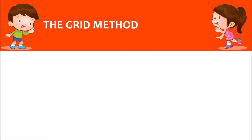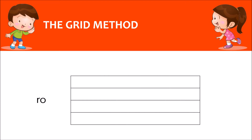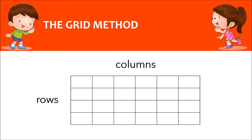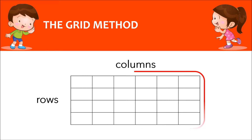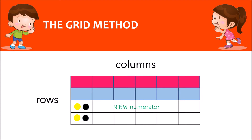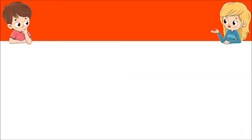This method uses rows and columns to represent the denominators. The product of the rows and columns will represent the new denominator, and the sum or difference of the numerators will be the new numerator.